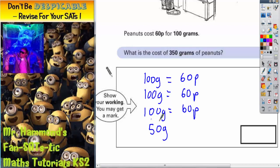Well, 50 grams is half of 100 grams, so it's half the weight. And if it's half the weight, it's going to be half the cost. So half the cost of 60p is 30p. So there we've got our cost.